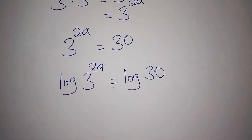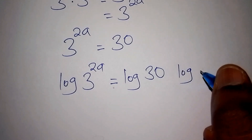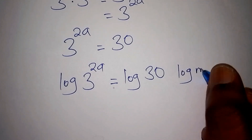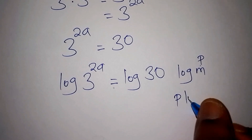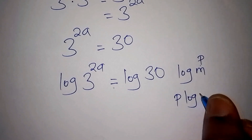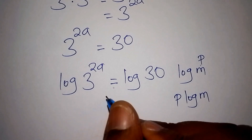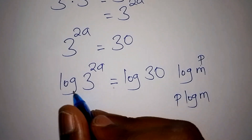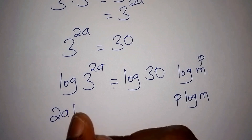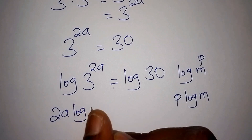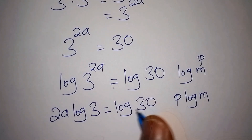When we have log of M to the power of P, this can be written as P times log of M. So instead of log of 3 to the power of 2A, we shall have 2A times log of 3 equals log of 30.